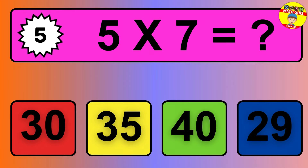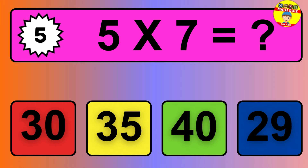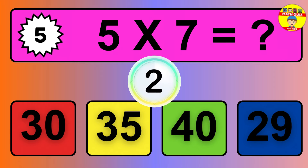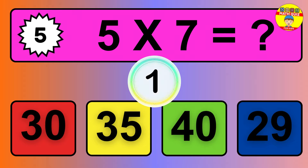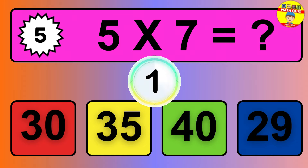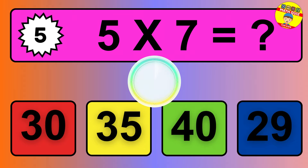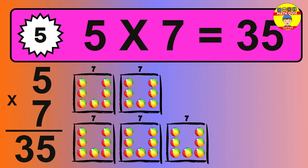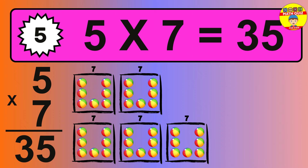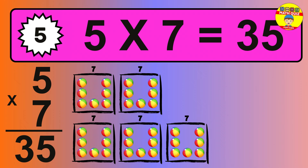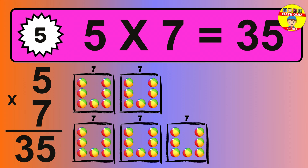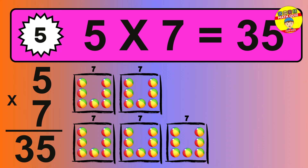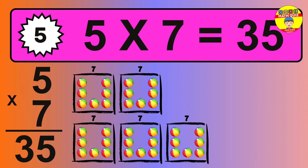Question 5. 5 times 7 equals what? The answer is 5 times 7 is 35. To calculate, we have 5 groups with 7 balls each one. So how many balls do we have? 35 balls.